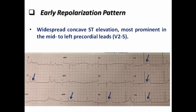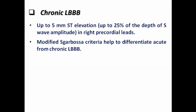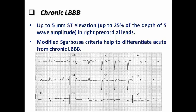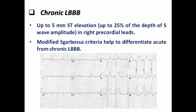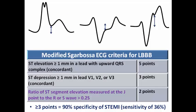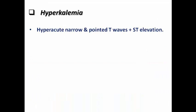In chronic left bundle branch block (LBBB), up to 5 mm ST elevation — or more precisely per the modified Sgarbossa criteria, up to 25% of the depth of the S-wave amplitude — can be seen as ST elevation in right precordial leads V1 to V3, and this is expected in chronic LBBB. The modified Sgarbossa criteria help differentiate acute from chronic LBBB when ST elevation is observed.